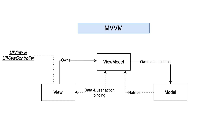Now let's compare the characteristics of MVVM with MVP. The view in MVVM has more responsibilities compared to MVP — it updates its state from the view model through bindings, whereas the MVP view simply forwards events to the presenter without updating itself. In terms of testability, the view model is easily testable since it knows nothing about the view. In terms of code, MVVM tends to be leaner due to bindings, whereas MVP requires manual forwarding of events and manual view updates.